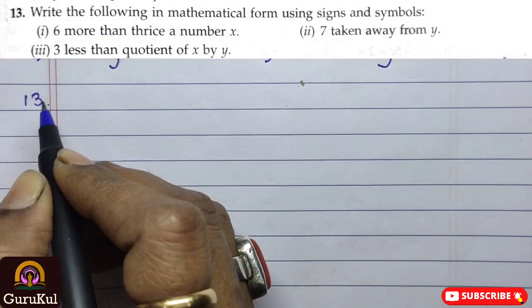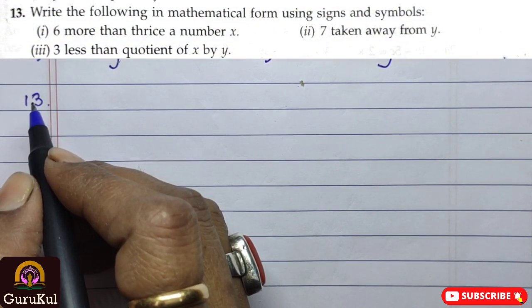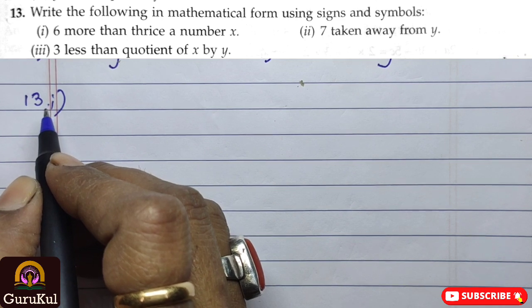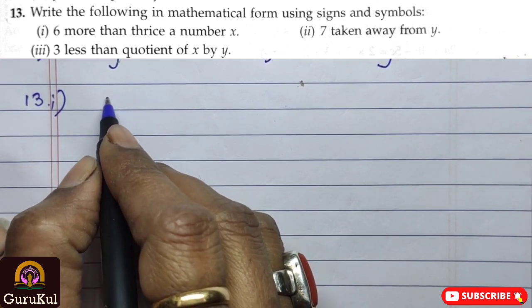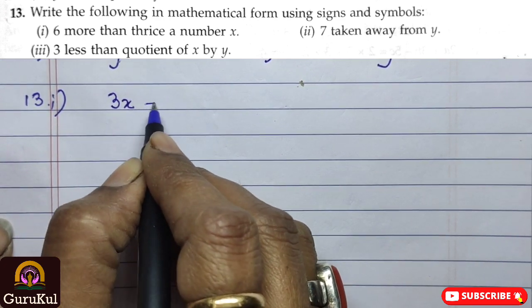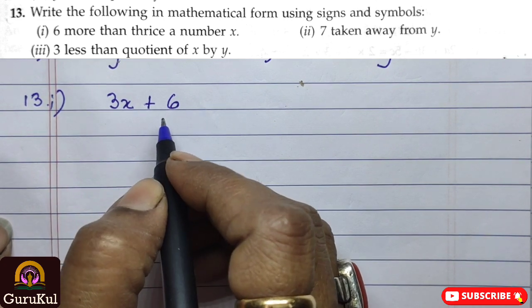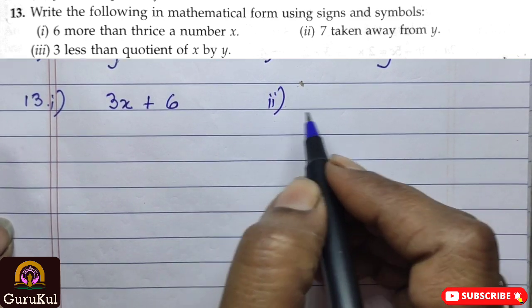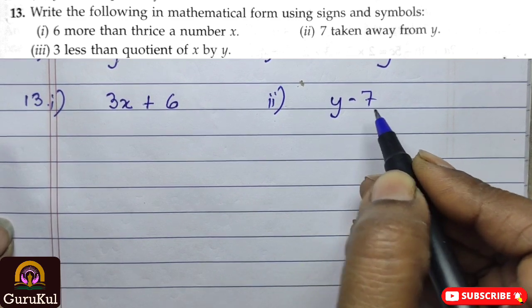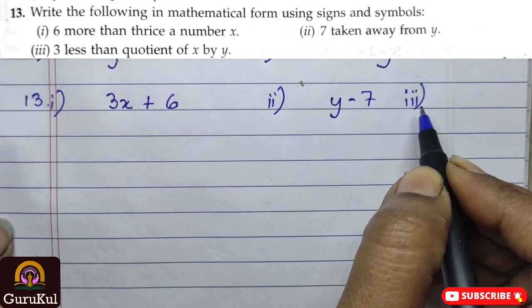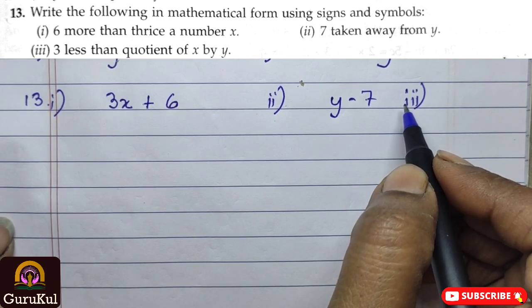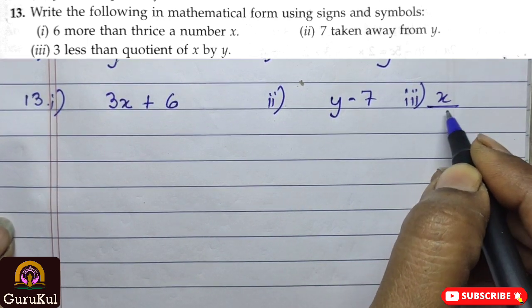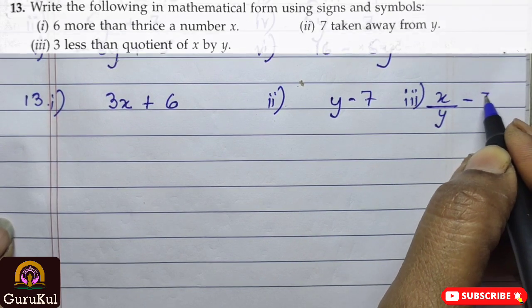Question number 13. Write the followings in mathematical form using sign and symbols. So, the first part is, 6 more than thrice a number. Thrice a number means, thrice a number x. So, it becomes 3x more means plus 6. This is the first mathematical form. Second, 7 taken away from y. So, y minus 7. And, thirdly, it says, 3 less than quotient of x by y. So, x by y means x by y. Less means minus 3.